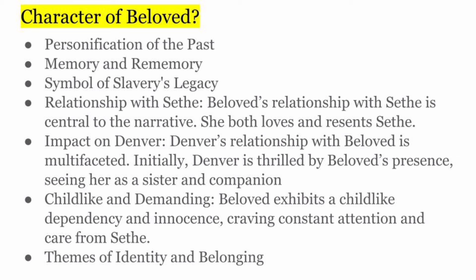Phir uska relationship Sethe ke saath, kis tariqe se uska impact tha, Denver ke saath ki Denver ke saath uska kitna acha relation tha — yahan pe woh sister and companion wali feeling dikhenge aap yahan pe jab aap Denver ke saath relation show karenge. Then is childlike and demanding — ki joh Beloved hai, woh pura dependency aur innocence show karti hai, aur attention ke liye crave karti hai, ki sath hi ek baar uska apna attention de, uska care kare. Then the last is theme of identity and belonging — ki kis tariqe se joh pura aapka past raha hai, usse aapki identity judi hui hai, aur aap usko nahi chhodd saakta.